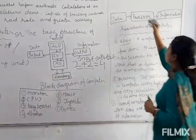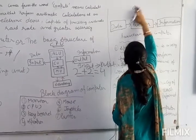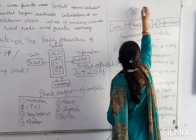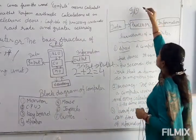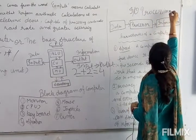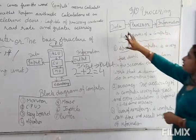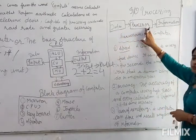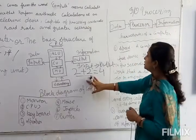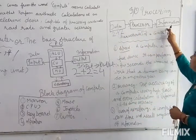हमारी diagram में input और output - यह हमारी I/O की processing है. यह working कैसे करती है: data, processor, information. सबसे पहले हम computer को data देते हैं, उसके बाद processing होती है, फिर information मिलती है. जैसे मैंने example दी थी 2+2, तो after processing हमें result मिला 4.